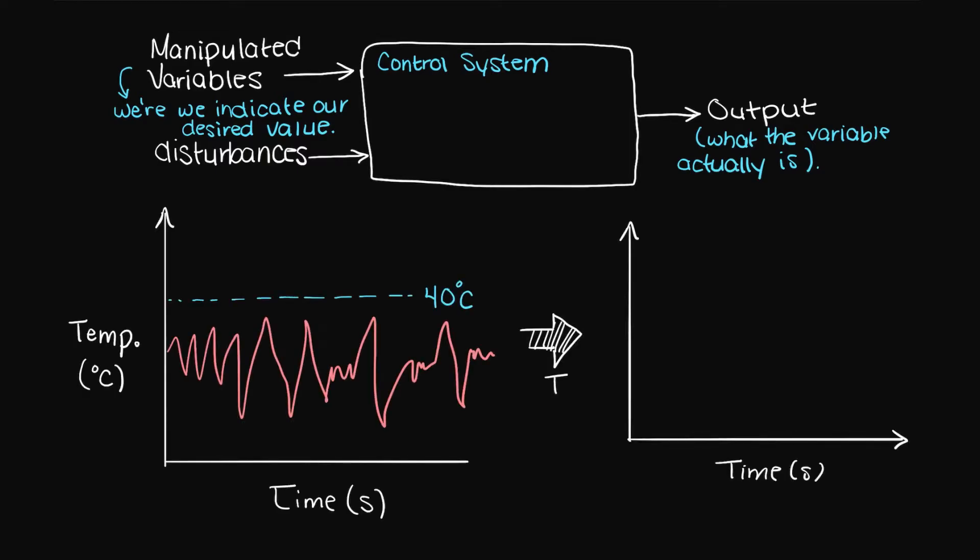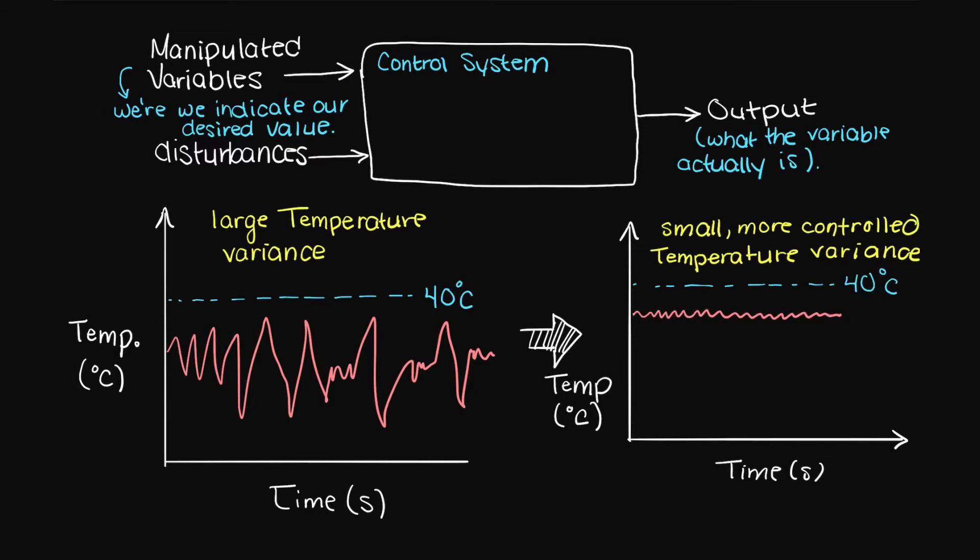After implementing our control system, we can minimize the temperature variance and save our company significant money, improve the safety of our plant, and ensure that our product, whatever it is, is always consistent to our consumers.